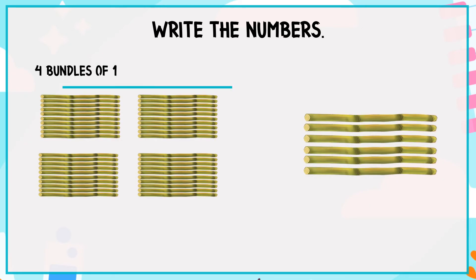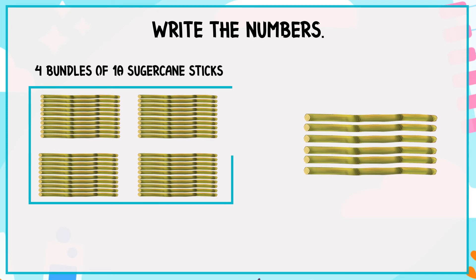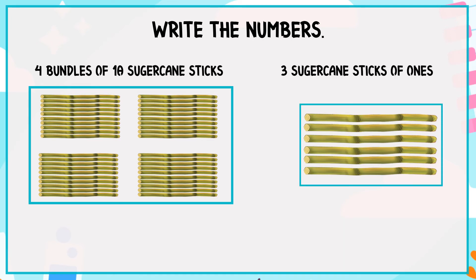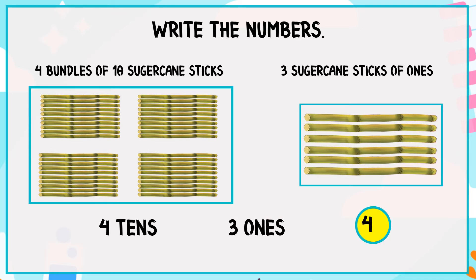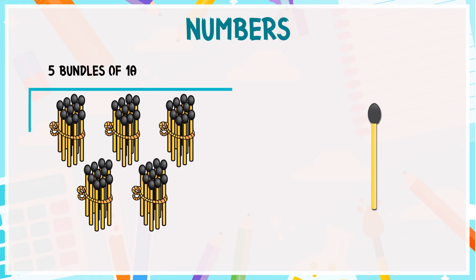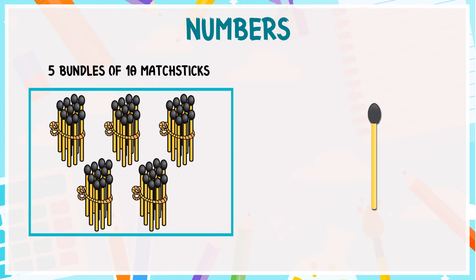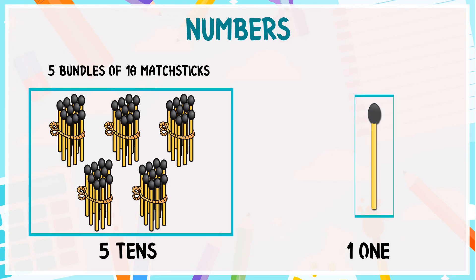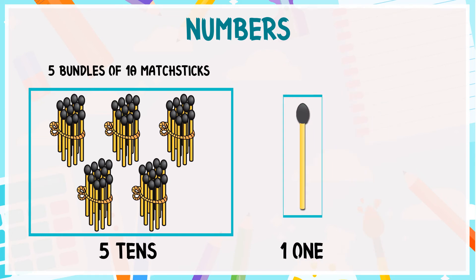4 bundles of 10 sugarcane sticks in each, so it will be 4 tens and 3 ones is equal to 43. So, 5 tens and 1 one is equal to 51.